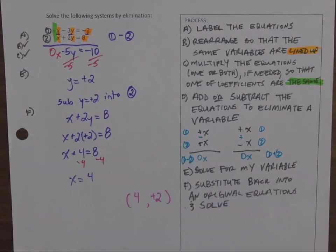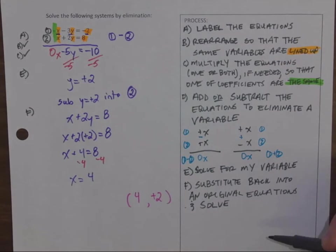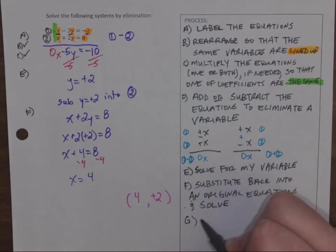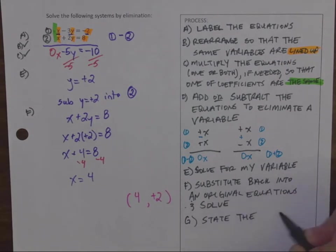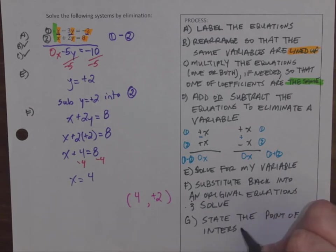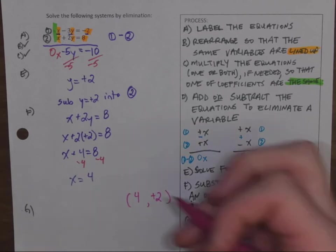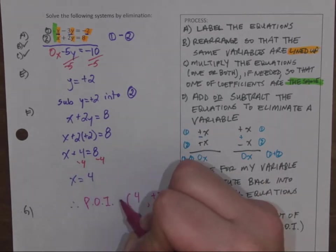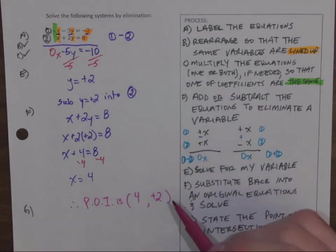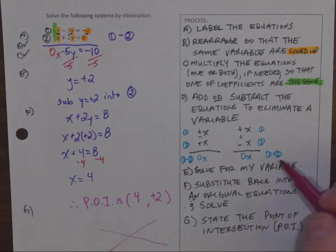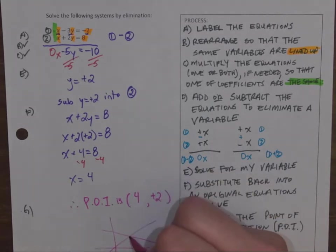My last step is I actually need to say what X is and say what Y is, but I need to put that. So I'm going to state the point of intersection, which remember we can write as POI. So those are two lines. However they look and where they cross is 4, 2.